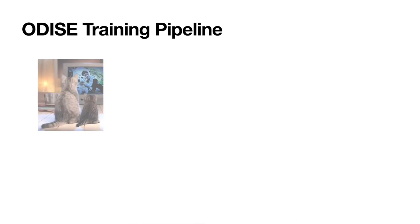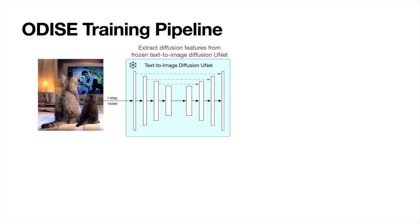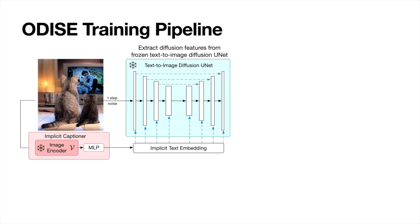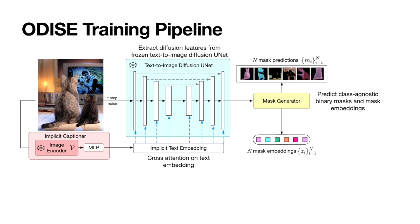Motivated by this finding, we propose to exploit internet-scale text-to-image diffusion models for Open Vocabulary Panoptic Segmentation of any concept in the wild. Here is the training pipeline of Odyssey. Given an input image, we first add a small amount of noise to the image and then input it into the frozen text-to-image diffusion unit to extract its internal visual representation. Since the diffusion unit is conditioned on a text embedding as well, we generate a text embedding for the input image via our proposed implicit captioner, which consists of a frozen image encoder and an MLP. Here we use MaskFormer to predict class-agnostic binary panoptic masks and mask embeddings.